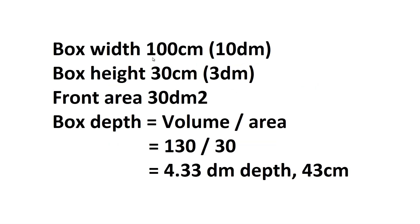So for the first example, we're going to go off a box width internally—once again, these are all internal numbers—of 100 centimeters, a box height internally of 30 centimeters, which leads a front area of 30 square decimeters. The box depth is volume divided by area, so 130 liters divided by 30 liters per decimeter gives us 4.33 decimeters of depth, so a 43 centimeter deep enclosure internally.